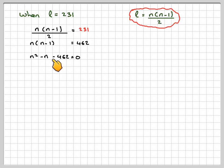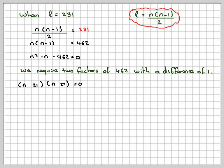Now, this must factorize, because we need N to come out to be a whole number. So we require two factors of 462 with a difference of 1, because we want just minus 1 in the middle. So with a bit of trial and improvement, you could come up with 21 and 22. 21 times 22 does make 462.